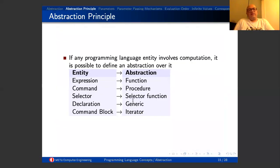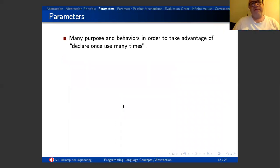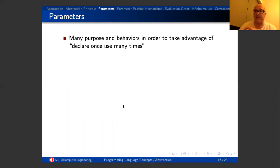The abstraction principle states: for any programming language entity that involves computation, we can define an abstraction of it. Expressions, functions, commands, procedures, selectors, declarations, generic abstractions, and repeated command blocks with iterators — all can have abstractions defined over them.